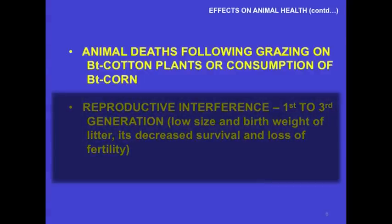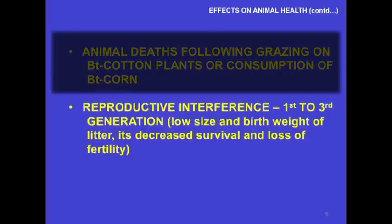In my state of Andhra Pradesh, in several districts, over a period of three years, several thousand cattle died after they foraged on the BT cotton plant after the cotton was harvested. There is every reason to believe these deaths were caused by the fact that the BT cotton plant itself contained toxin, which normal cotton plants do not contain. Then there's reproductive interference, documented by an Austrian group supported by the government—problems continuing up to the third generation: low litter size and birth weight, decreased survival, and loss of fertility.